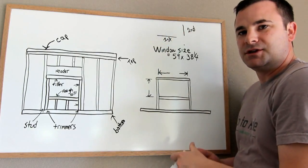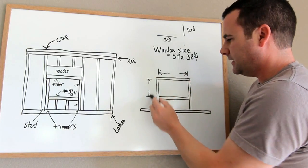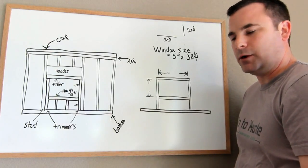So whether it's a door, garage door, or window, 59 is this, 38 and a quarter is that. So that's the actual physical measurement of your window.